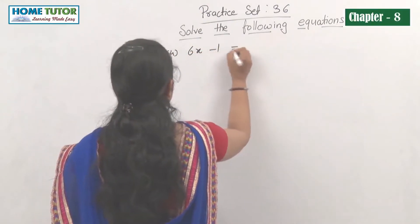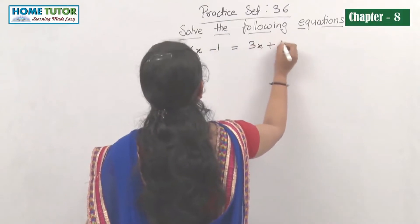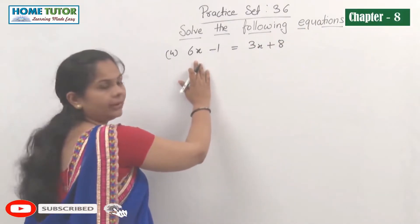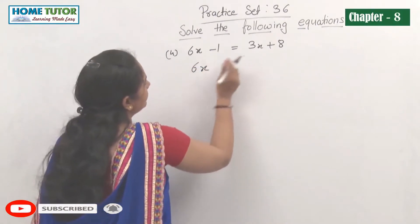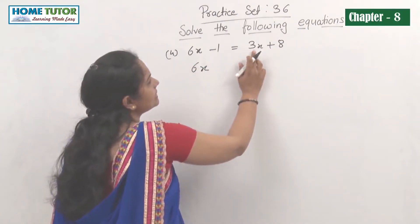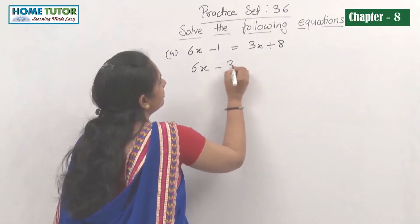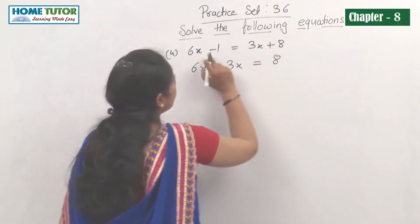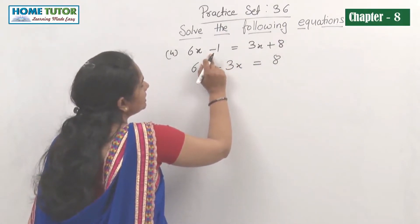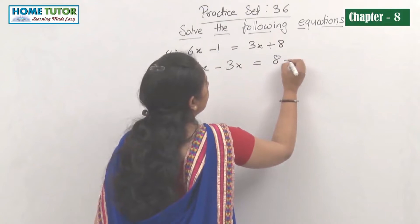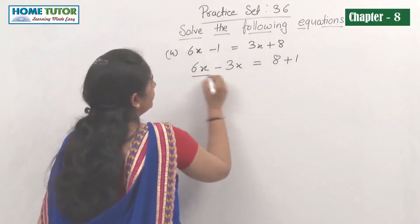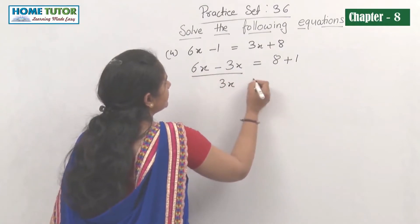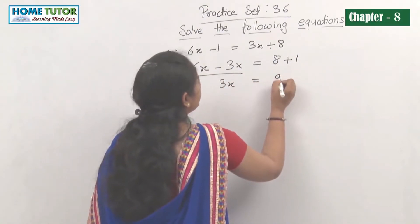Next equation: 6x minus 1 equals 3x plus 8. We have to find the value of x. Take like terms together: 6x minus 3x equals 8, and then minus 1 moves to the right and becomes plus 1. So 3x equals 8 plus 1, which is 9.